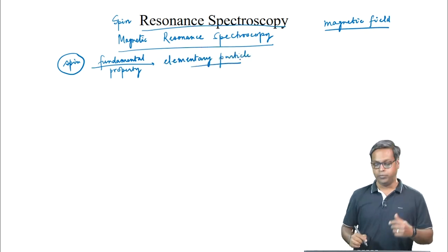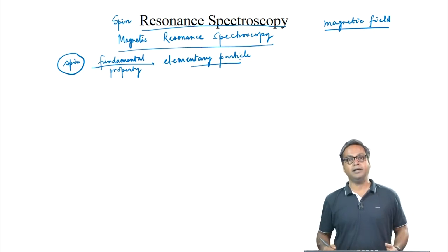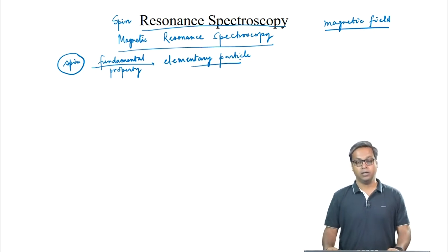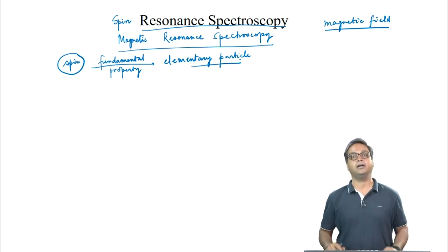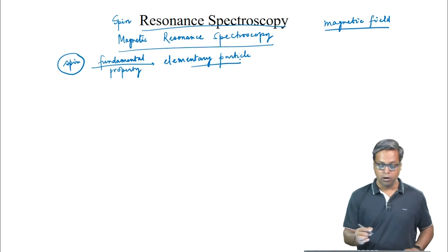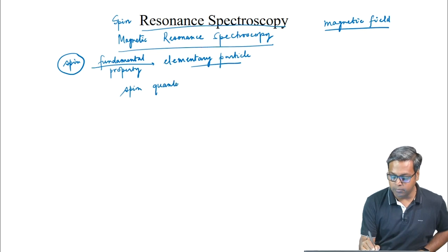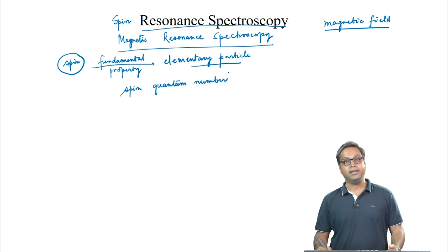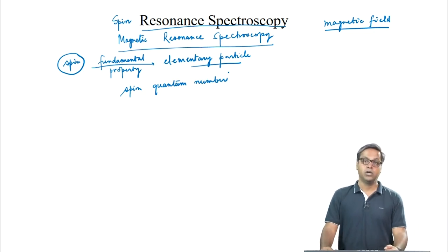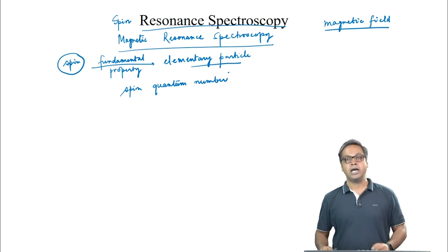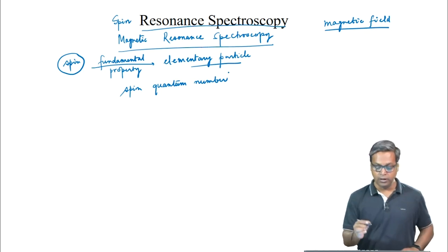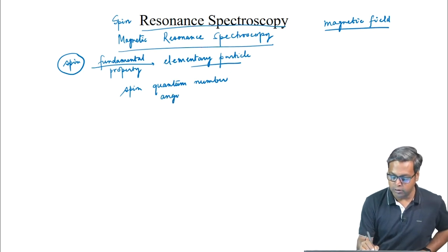For example, electron is an elementary particle and electron has spin. This spin has no classical analog. The introduction of spin quantum number in quantum mechanics could explain many puzzling features. The spin is manifested by the presence of an intrinsic angular momentum.